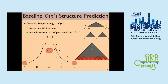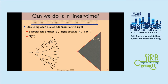This prediction algorithm is actually cubic time O(n³), where n is the length of the RNA sequence. That means if your sequence length goes twice longer, your prediction time gets approximately eight times higher.